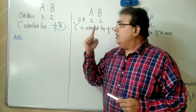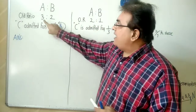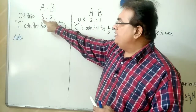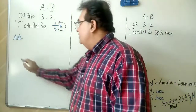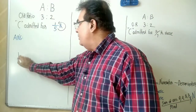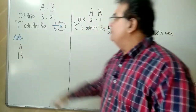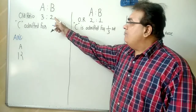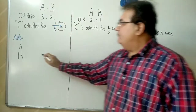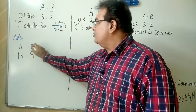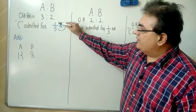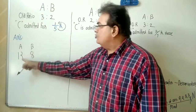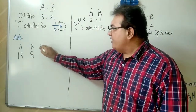Now multiply that 4 (in your mind) by A's share: 4 × 3 = 12. That is A's share in the new ratio. Again, 4 in your mind — multiply by B's share: 4 × 2 = 8. So far: 5 minus 1 is 4, 4 × 3 = 12, 4 × 2 = 8.